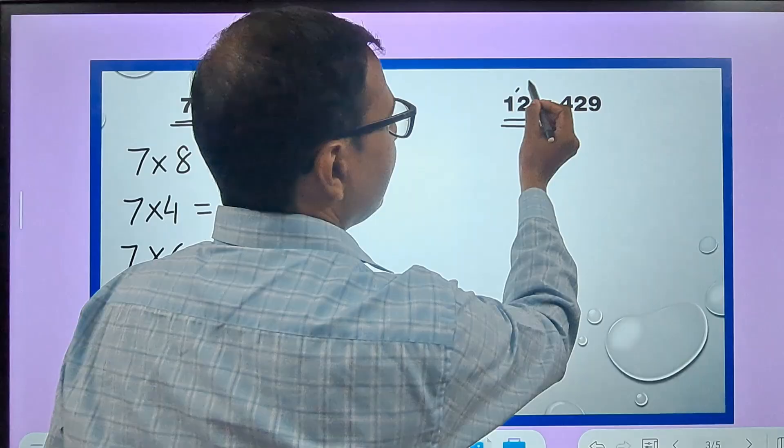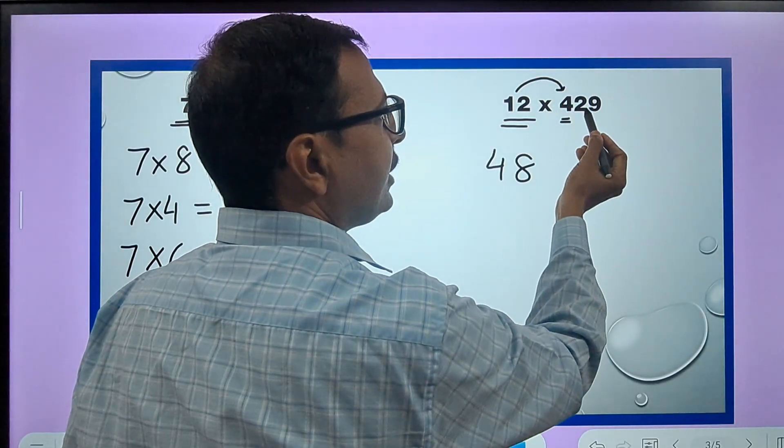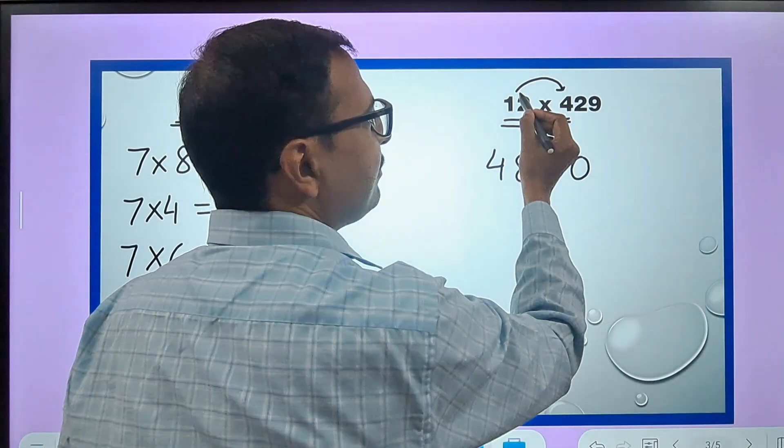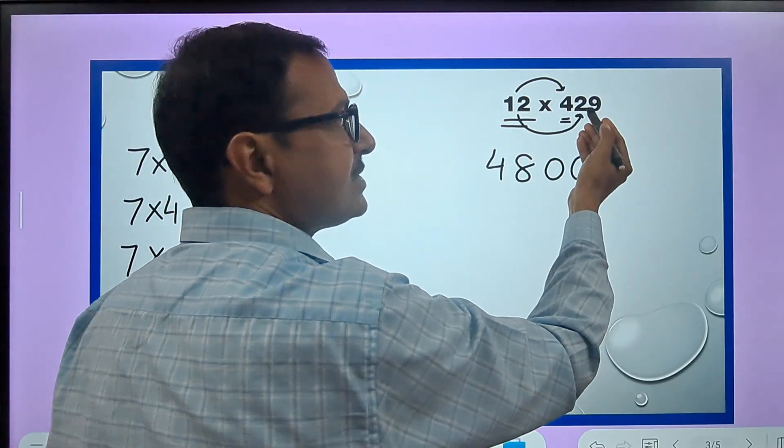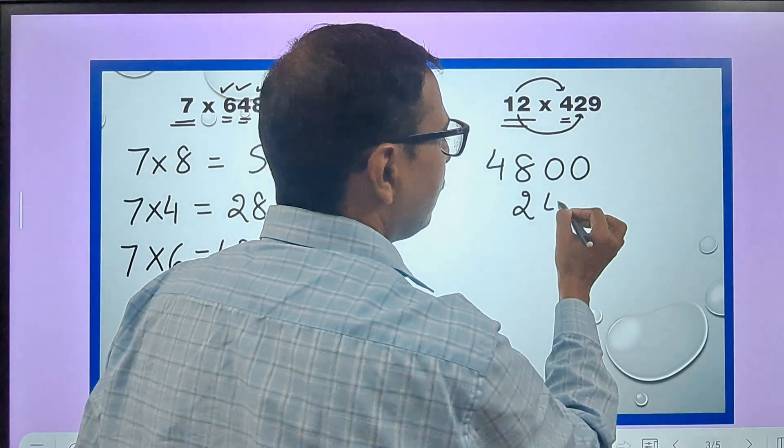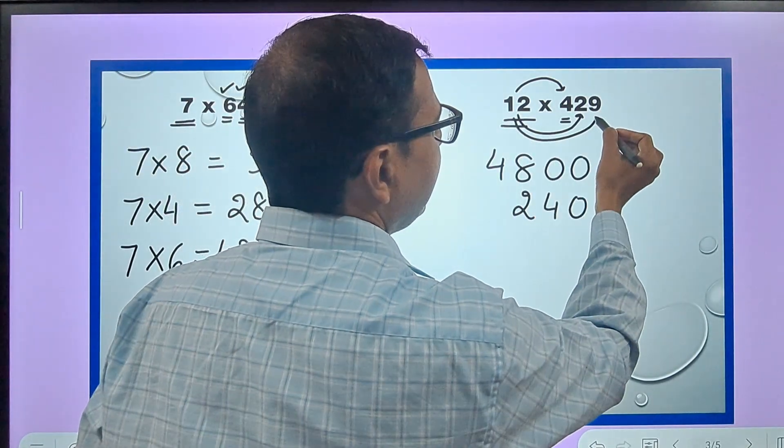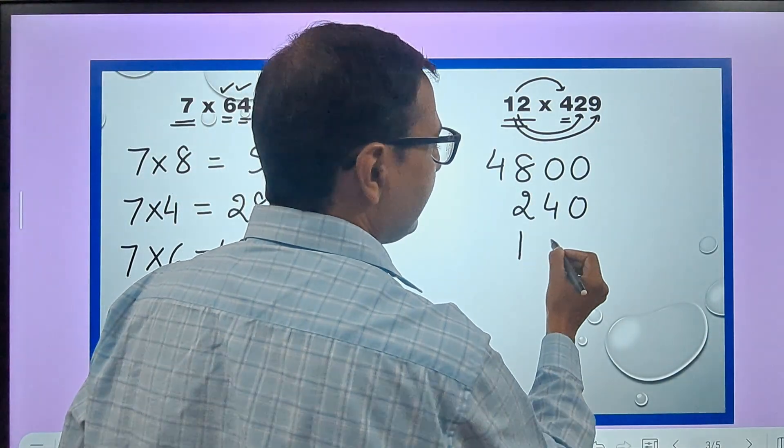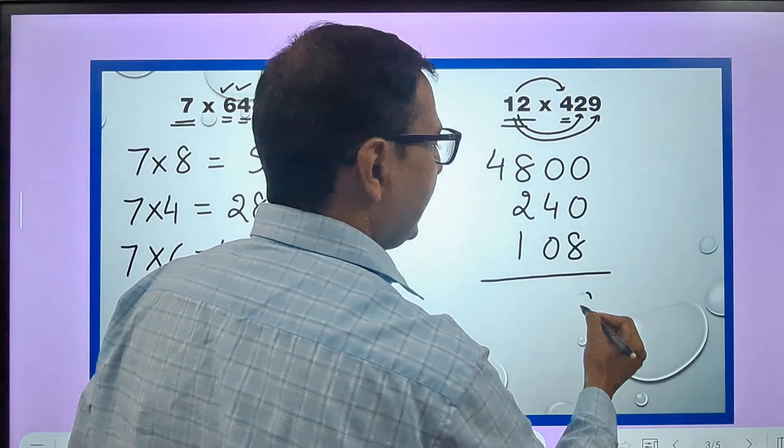12 times 4 is 48, and 4 is followed by 2 digits so 2 zeros to be written here. Likewise, 12 times 2 is 24 and 1 zero because 2 is followed by only 1 digit. So 24, and then 12 multiplied by 9 which is 108.